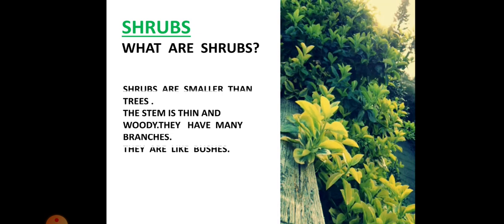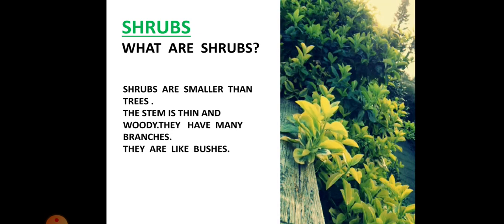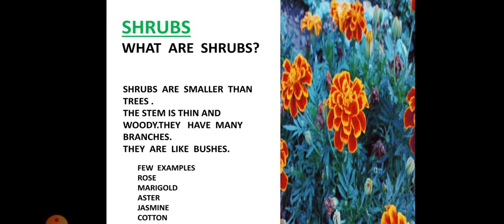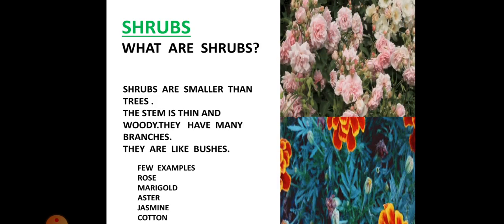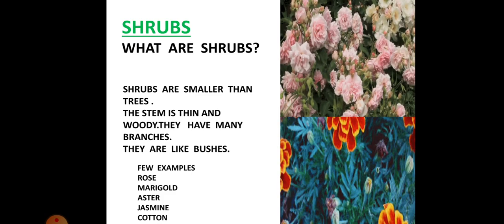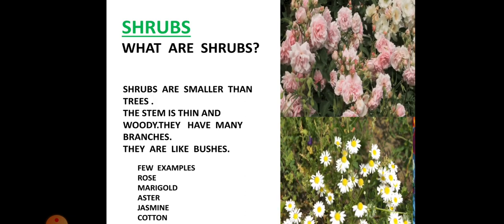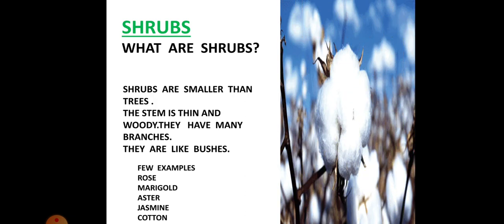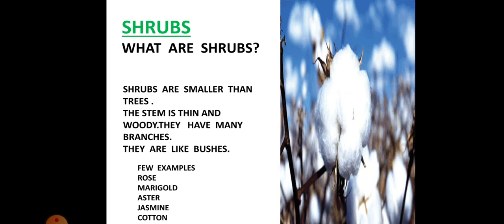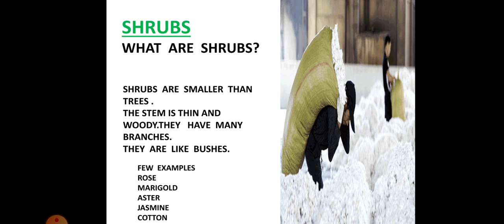The next plant are the shrubs. Now what are shrubs? The shrubs are smaller than trees. The stem is thin and woody. They have many branches. They are like bushes. Here are some pictures of shrubs and few examples. Rose, marigold, aster, jasmine and cotton. These are some examples of the shrubs.